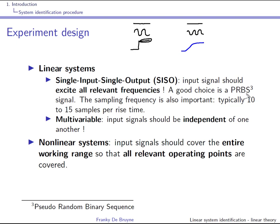In a pseudo random binary sequence you can set the level and the number of transitions between low and high in a given period. Also important is the sampling frequency — typically, if you know the rise time of the system, take 10 to 15 samples per rise time. This is of course a rule of thumb.